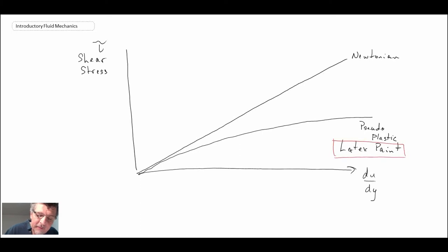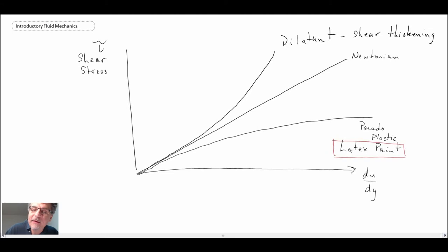Another type of fluid, where the more shear you apply, the higher the shear stress, that is what we would call a shear thickening or a dilatant. And a common fluid that has that attribute would be water and cornstarch.